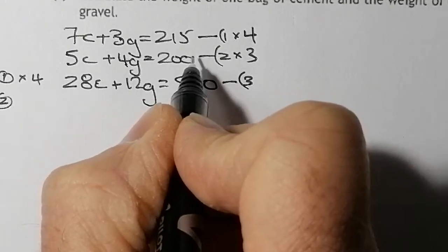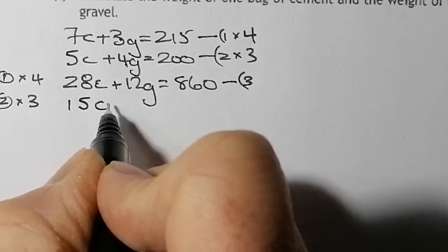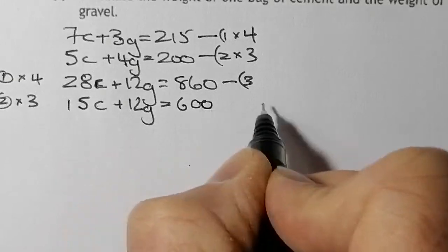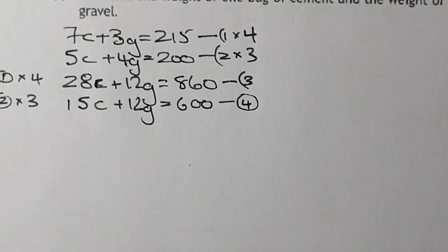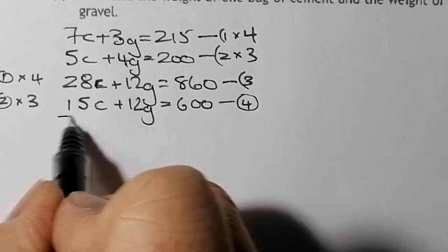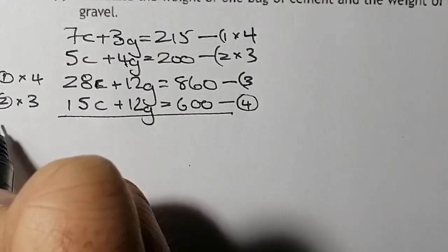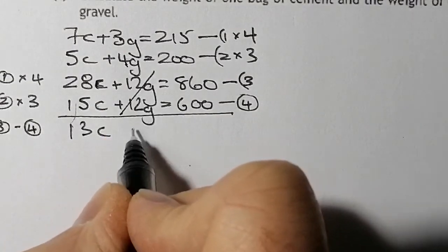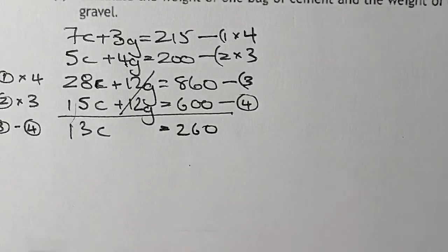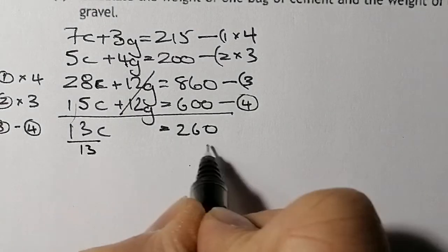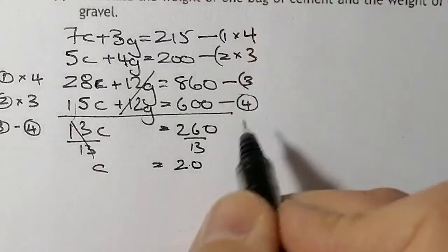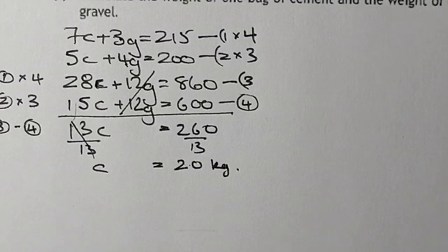Now I'm going to eliminate by subtraction. I'll start with equation 3 and take away equation 4. That gives me 13C, the 12G terms eliminate to 0, and 860 minus 600 gives me 260. So I divide both sides by 13, which leaves me with C equal to 20 kilograms. That's one bag of cement. I'm going to make a statement at the end, so I'm okay just noting the 20 here.